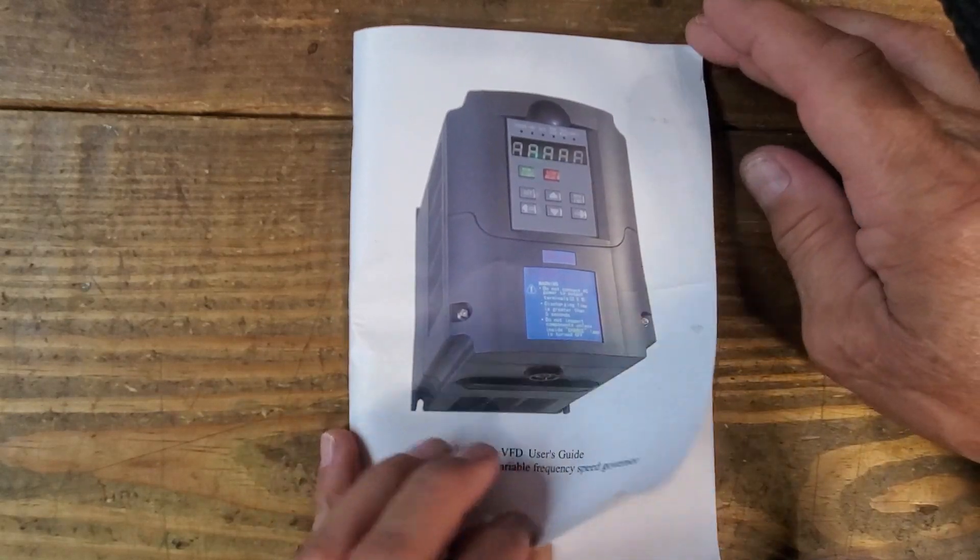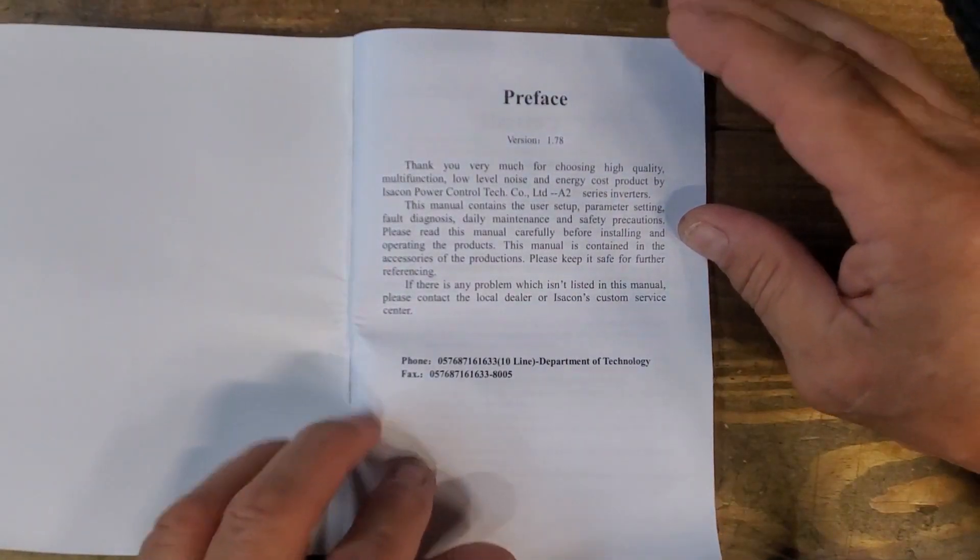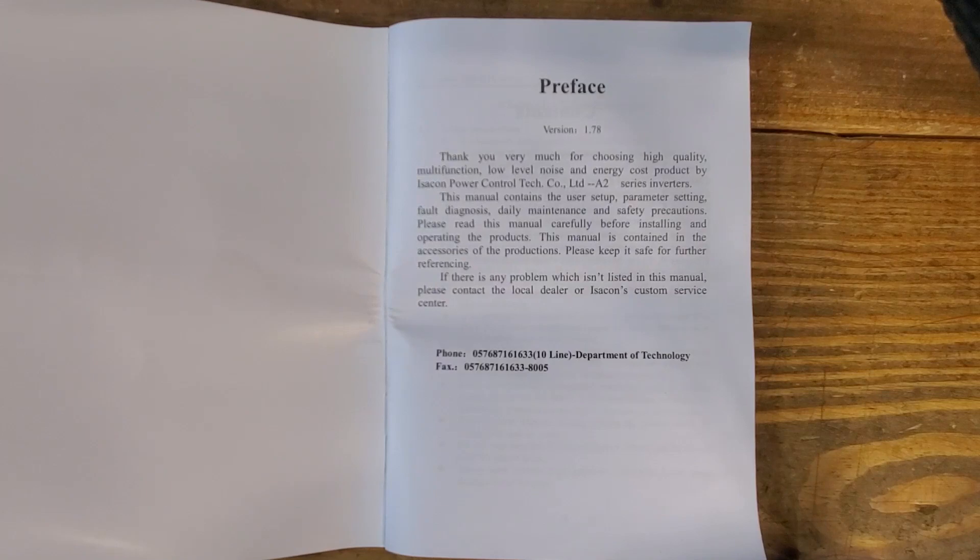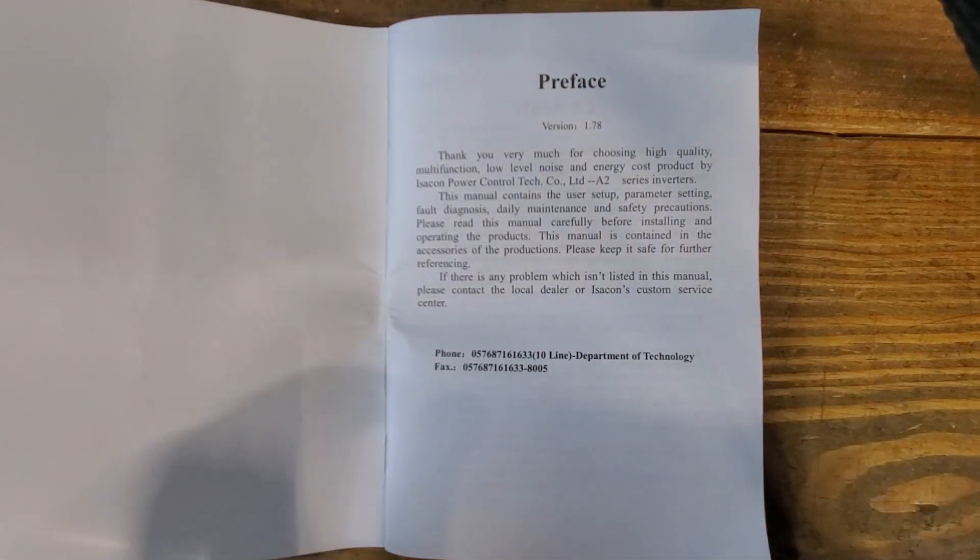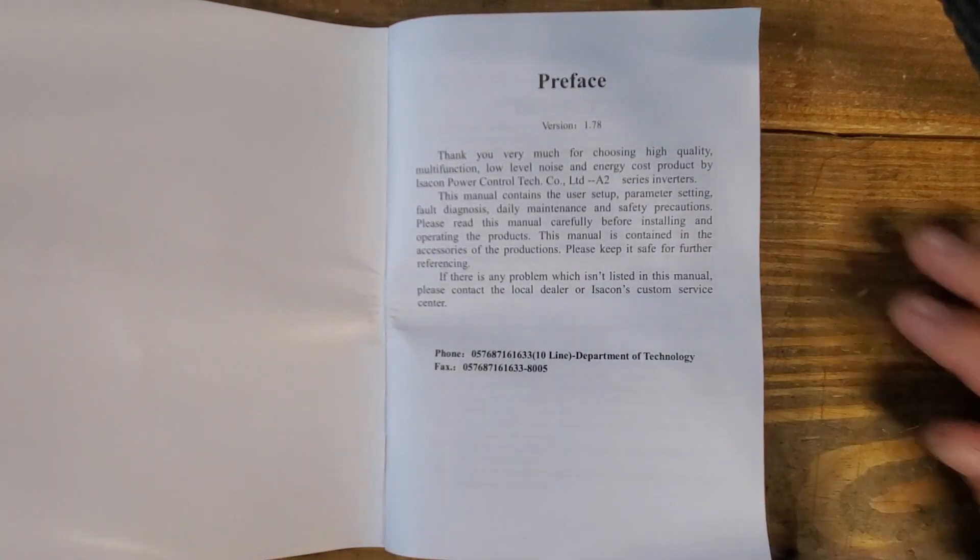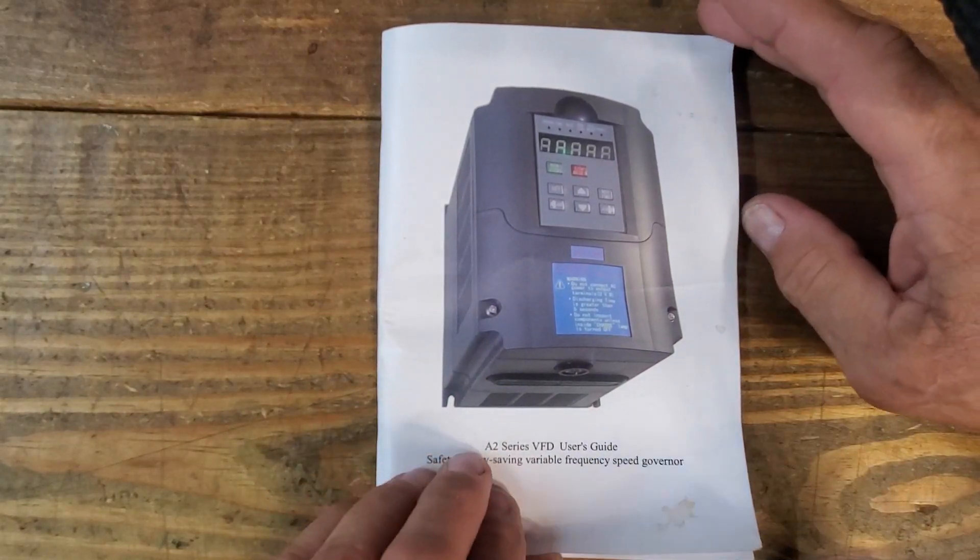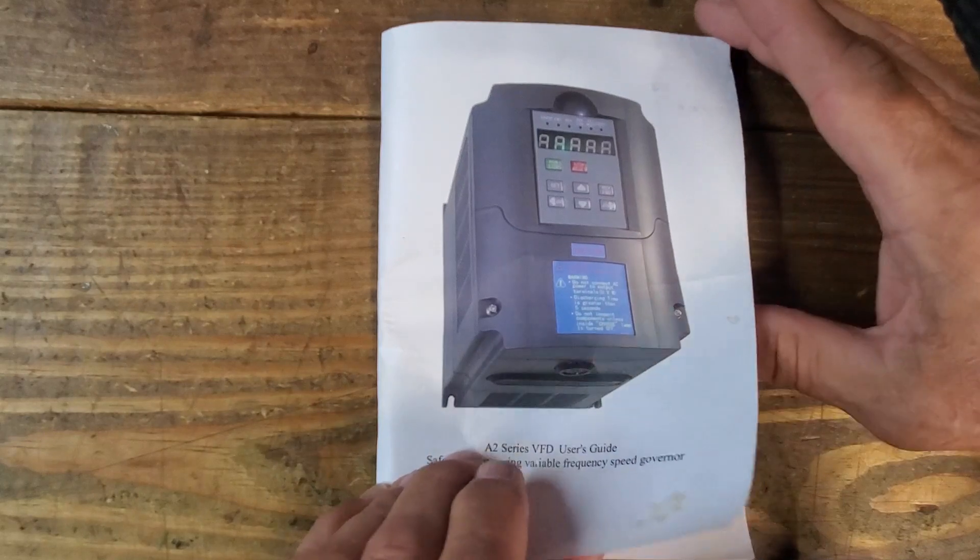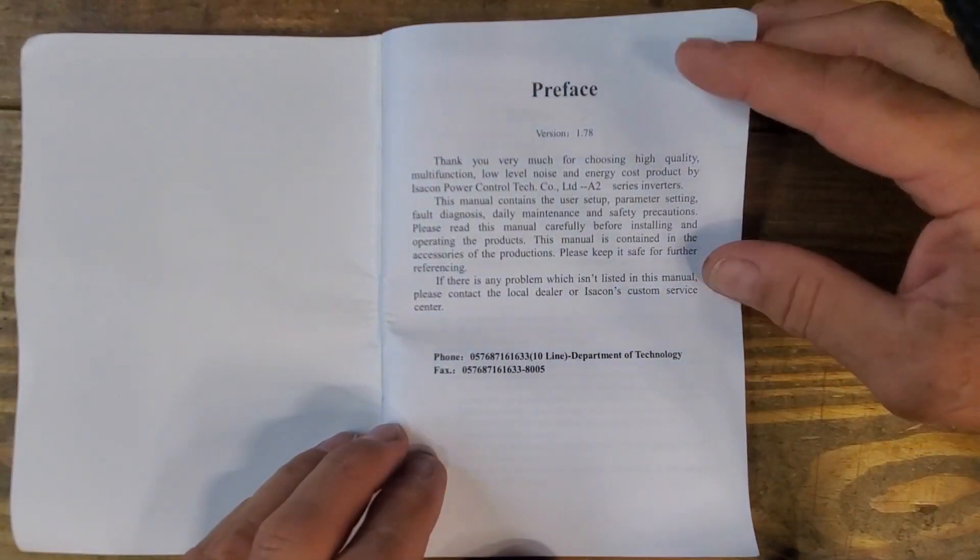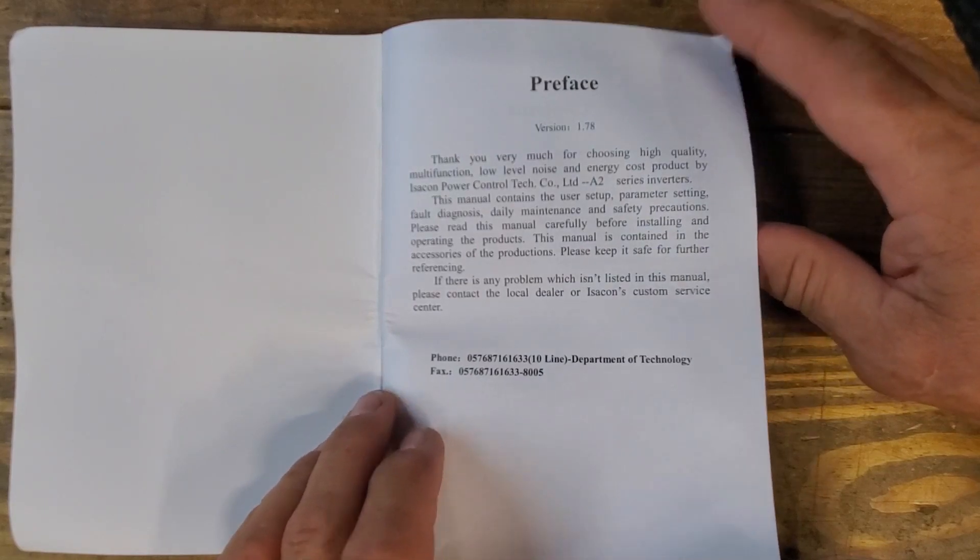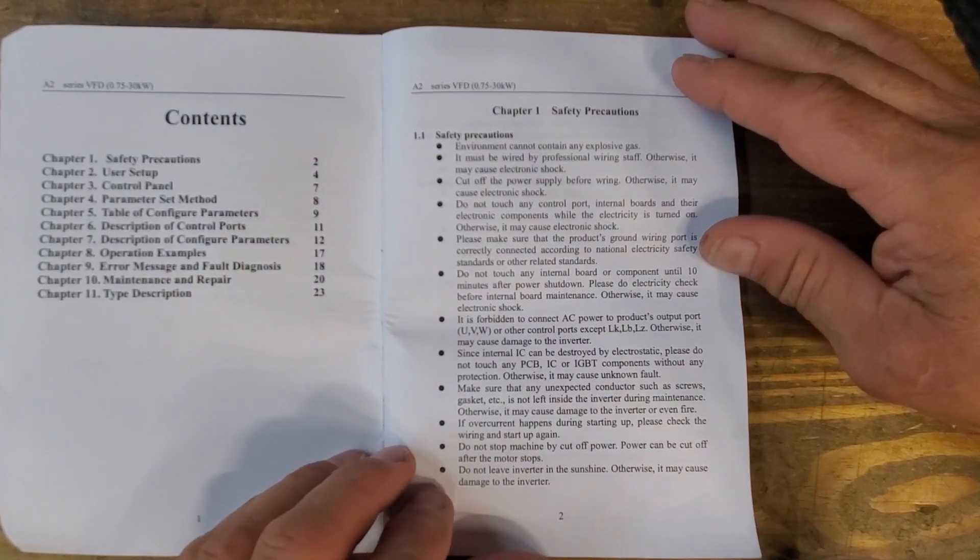Some other questions I've had about power and reversing and things like that. We'll get into a few of the questions as we proceed. So this is the manual that came with my drive. It's a poorly translated manual from Chinese I think, so it's not that easy to follow.